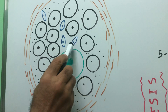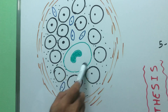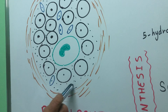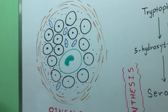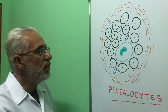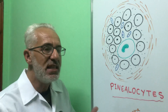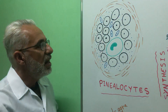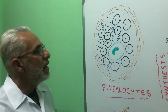Neighboring the pinealocytes there are a lot of interstitial cells. There is also a macrophage, and there is an accumulation of different minerals, especially calcium and phosphate, which collectively are called brain sands. The brain sands are somewhat ambiguous — some scientists link them to aging, others to diseases such as Alzheimer's disease — but there is still ongoing debate regarding the cause or meaning of those brain sands in the pineal gland.